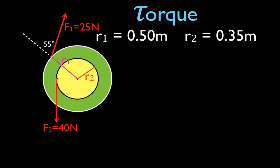The other force is applied at the edge of the second wheel such that the angle between the force vector and the radial vector is 90 degrees. We want to find the sum of the torques acting on this wheel and determine which direction — clockwise or counterclockwise — the wheel will rotate when both forces are applied simultaneously.